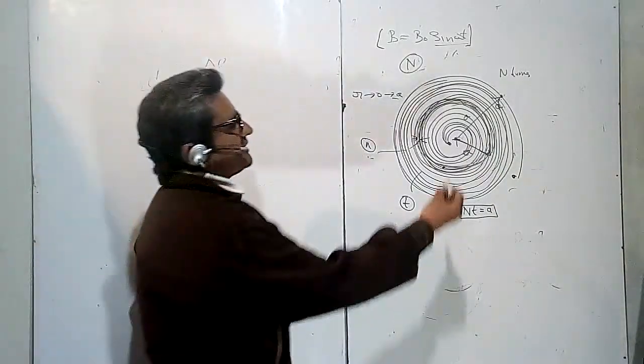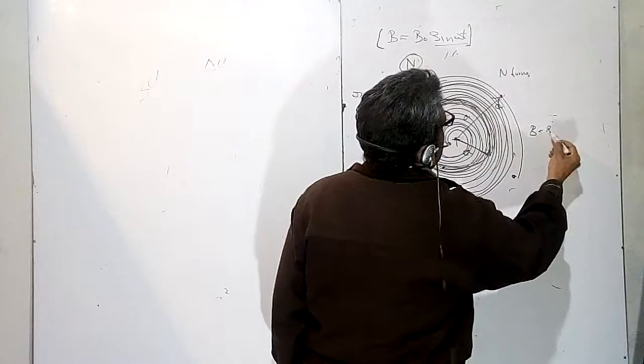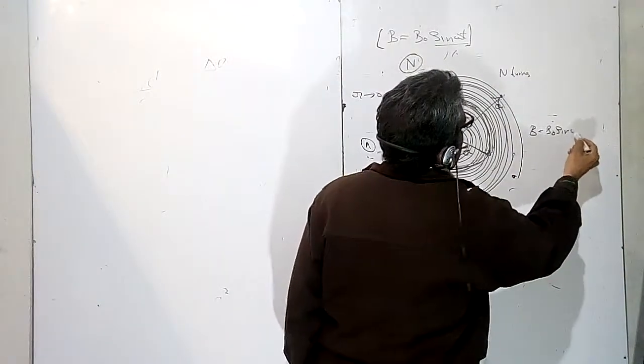The magnetic field is B, where B is equal to B₀ sin(ωt).